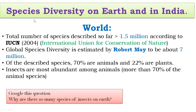Now let's talk about species diversity on earth. We don't have the exact number as of now, only estimates. If we talk about the total number of species described so far by biologists, according to the IUCN in 2004, biologists have described about 1.5 million different species. IUCN stands for International Union for Conservation of Nature.